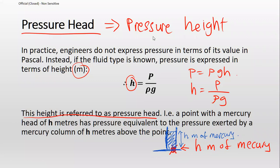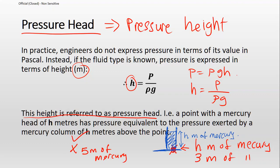Expressing pressure in head provides an easier comparison. For example, if one point is 3 meters of mercury and another is 5 meters of mercury, it's immediately clear which has higher pressure. Comparing 10,950 Pascal to 9,850 Pascal takes longer than comparing 5 meters versus 3 meters of mercury — where 5 meters of mercury clearly has higher pressure.